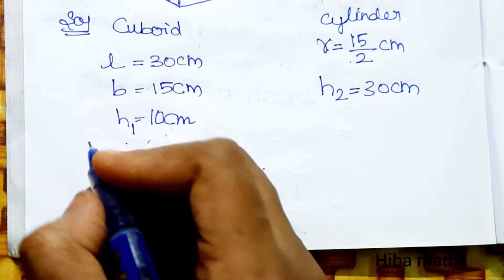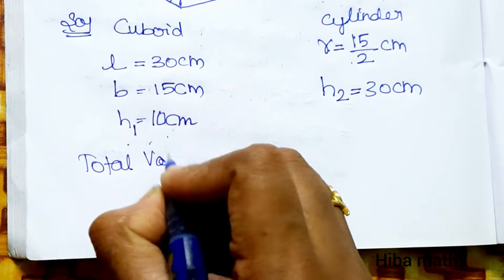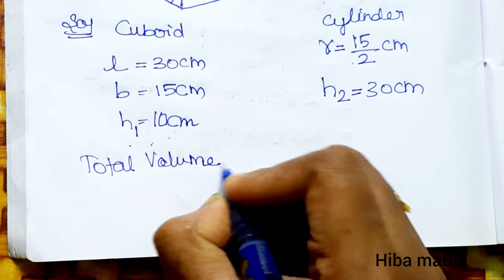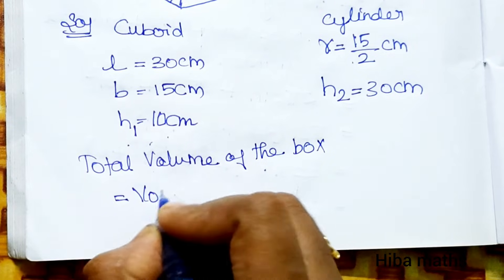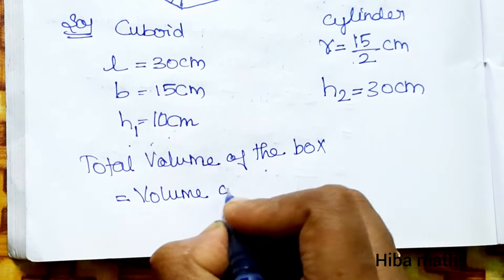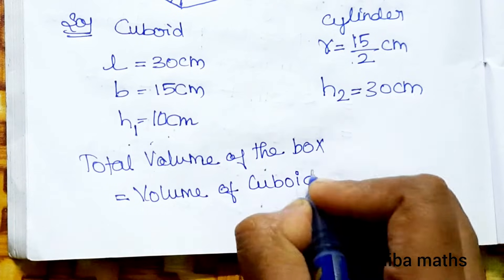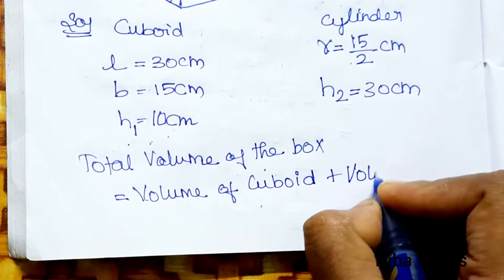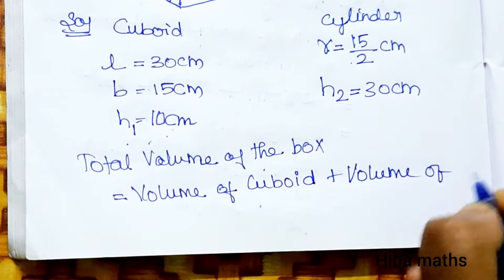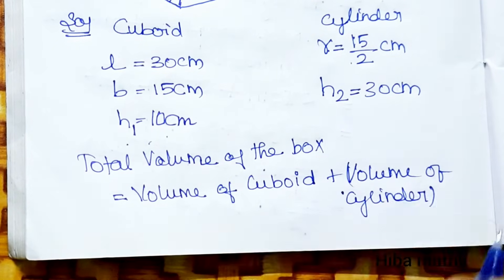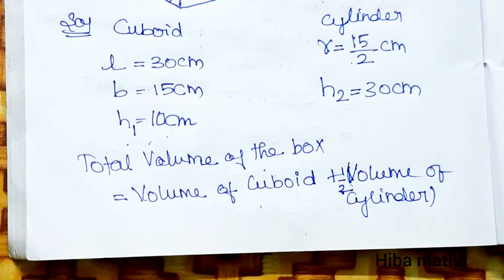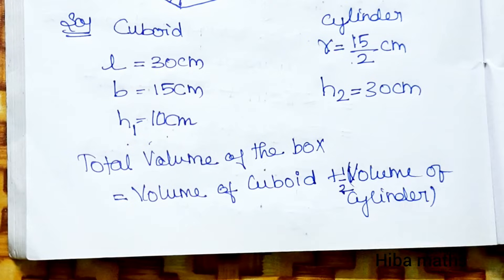Total volume of the box equals the volume of the cuboid plus the volume of the half cylinder. Since it is a half cylinder, we multiply the cylinder volume by 1/2.